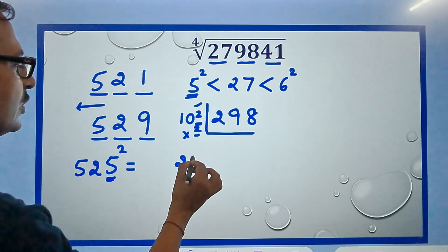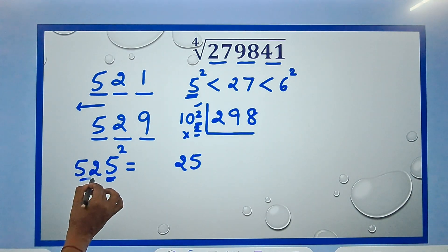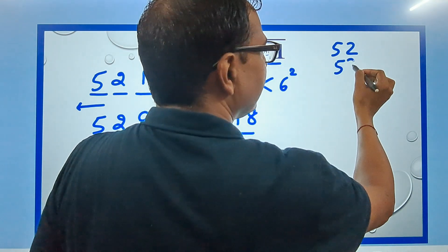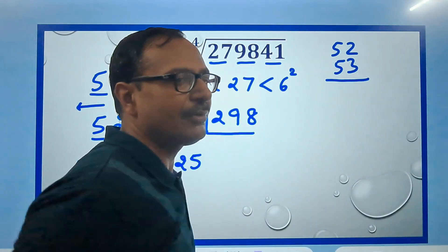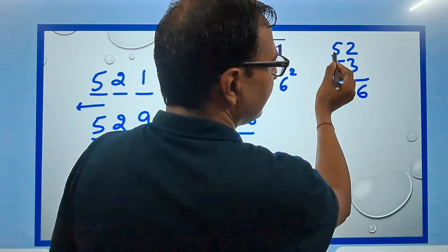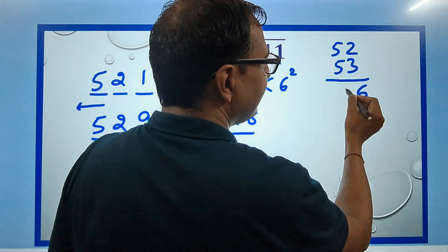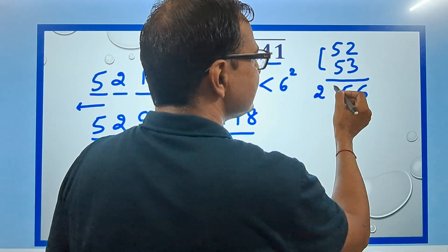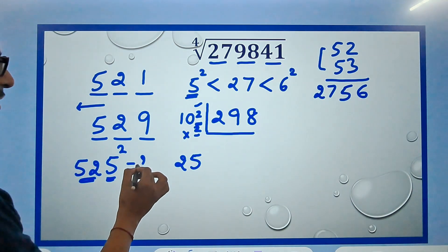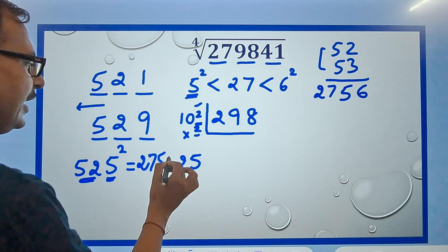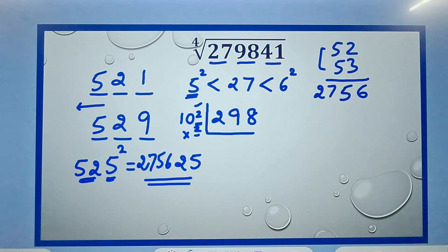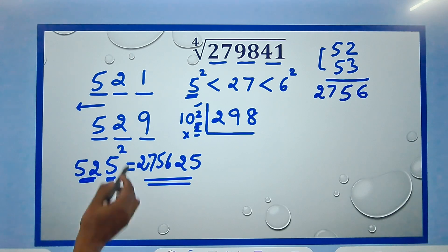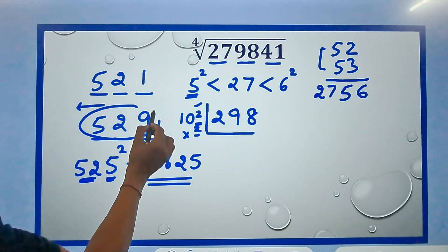If I can find the square of 525 that will be the easiest thing. 5 square is 25 so your answer is going to end in 25 and this number 52 I have to multiply by its consecutive number 53. So I can use vertical and crosswise there. 3 times 2 is 6. 15 and 10, 25. So 5 and a 2 carry, 25 and 2 is 27. So 2756. And now look at this number 275625. This number 279841 is greater than this and therefore your answer is the greater one.